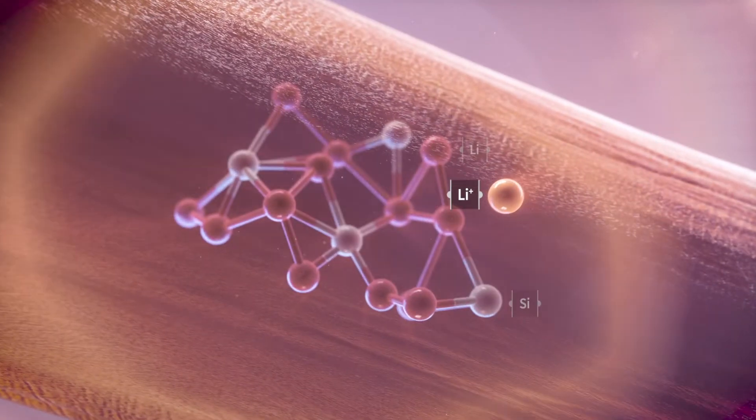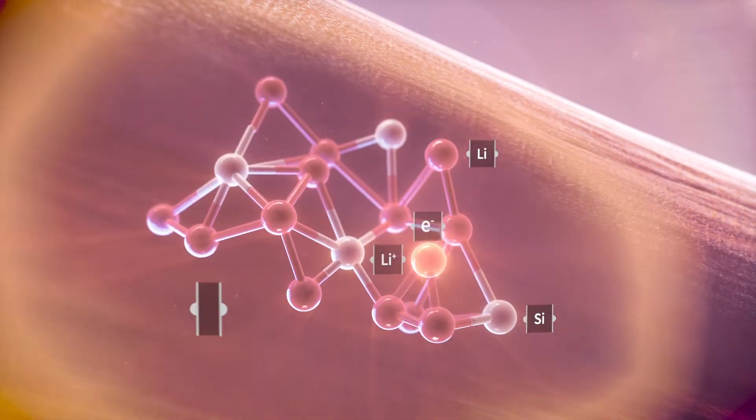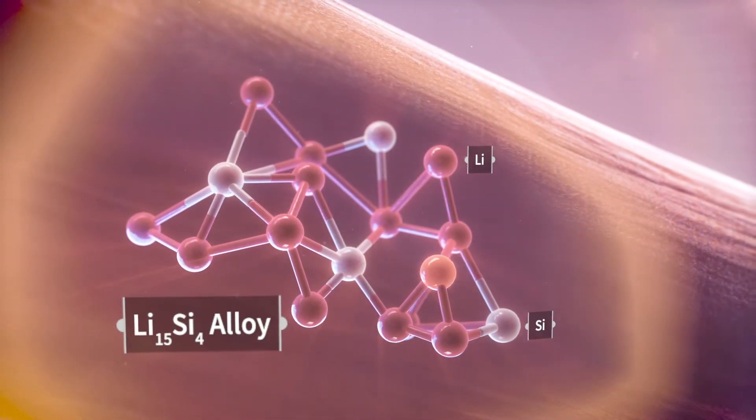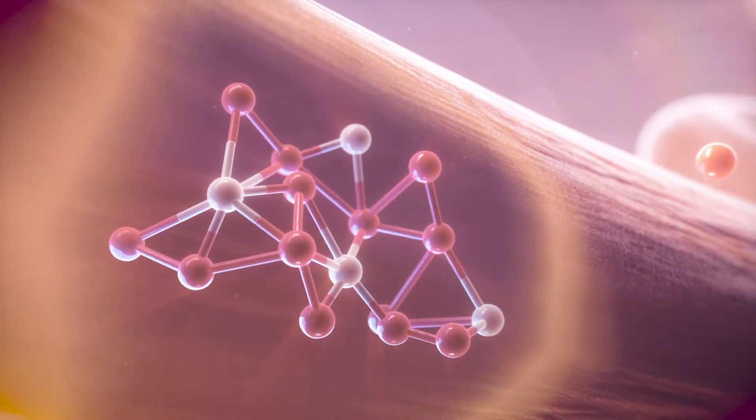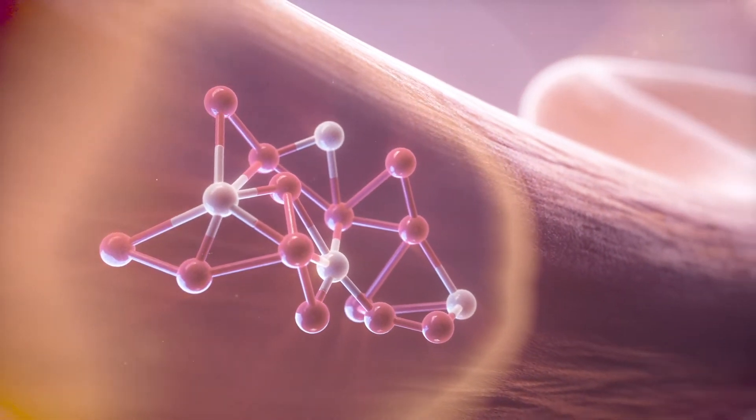This triples the energy stored in the anode and increases charging speed. During discharge, the lithium ions and electrons are quickly released, increasing power density.